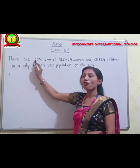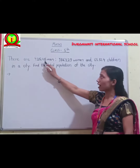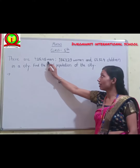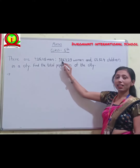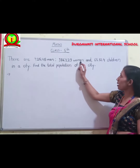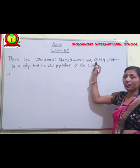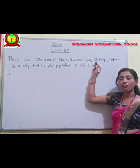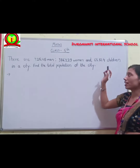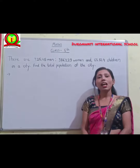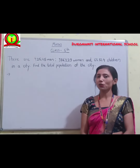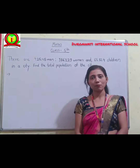There are 4,25,415 men, 3,86,229 women and 65,324 children in a city. You have to find out the total population of the city.